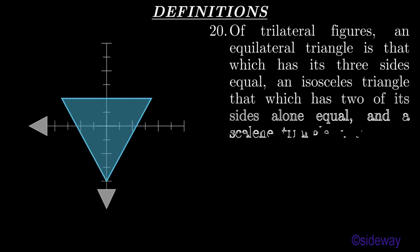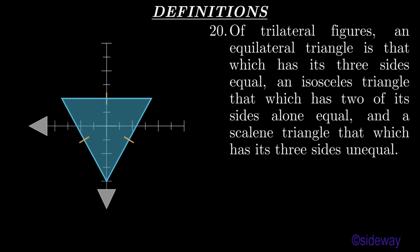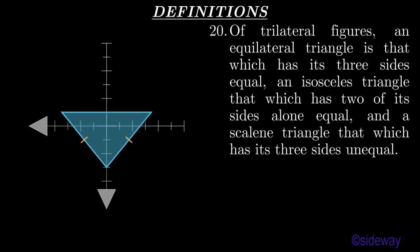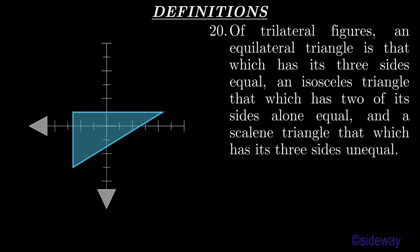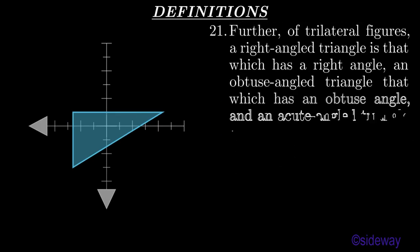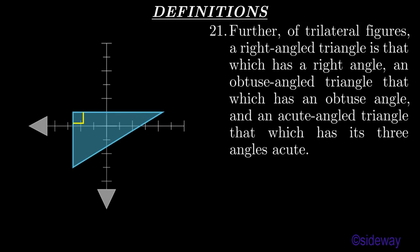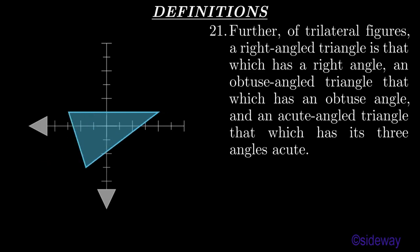Of trilateral figures, an equilateral triangle is that which has its three sides equal; an isosceles triangle that which has two of its sides alone equal; and a scalene triangle that which has its three sides unequal. Further, of trilateral figures, a right-angled triangle is that which has a right angle; an obtuse-angled triangle that which has an obtuse angle; and an acute-angled triangle that which has its three angles acute.